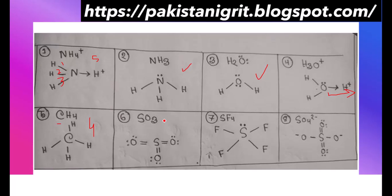So we know that oxygen or sulfur has two lone pairs available for forming sigma bonds. Here sulfur is forming one sigma bond, so if sulfur is forming one sigma bond it will have sp2 hybridization. While in SF4, sulfur is forming four sigma bonds, so its hybridization will be sp3d.